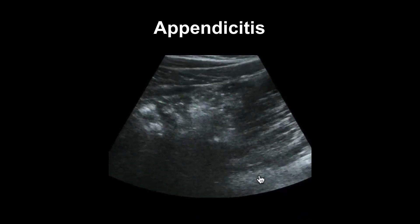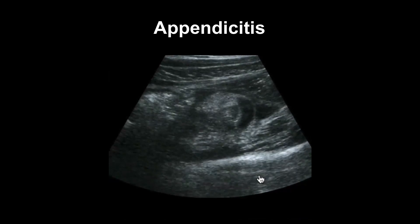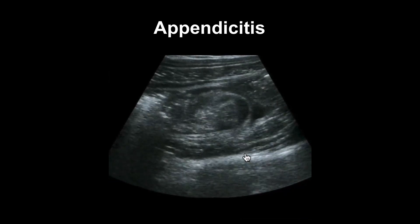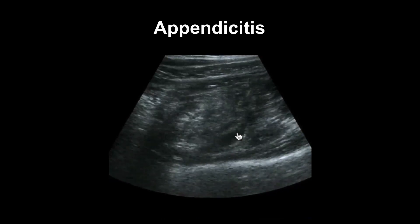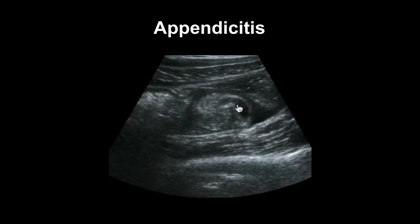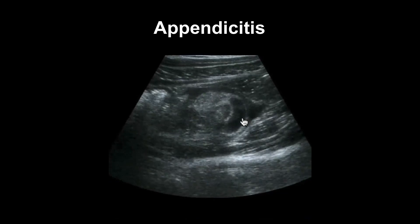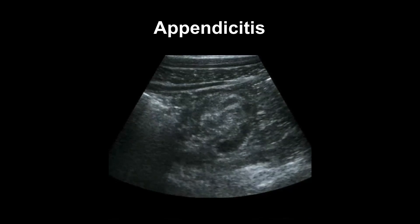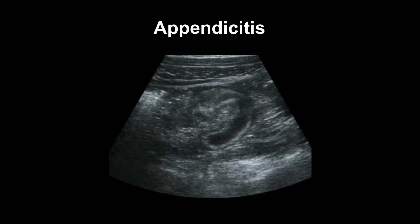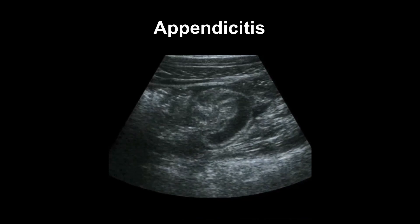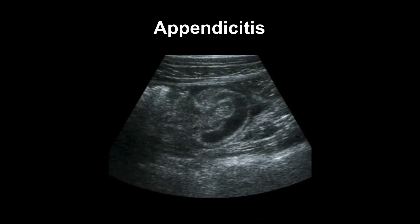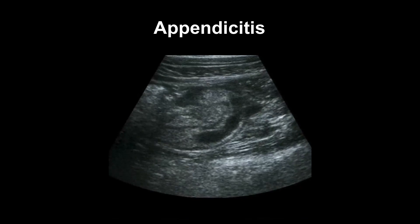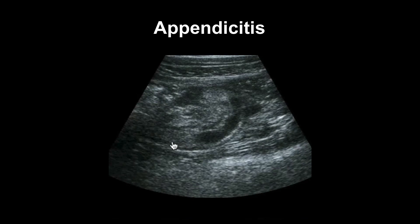Now we go into a long section over the cecal pole and we see the dilated appendix coming out here and moving behind the cecal pole. This is the typical presentation of appendicitis.